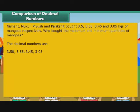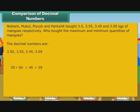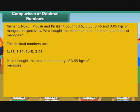So we have 3.50, 3.55, 3.45, 3.05. All the numbers have 3 to the left of the decimal point. Therefore, we arrange them on the basis of the digits after the decimal point: 50, 55, 45, and 05. We know that 55 is greater than 50, which is greater than 45, which is greater than 05. Therefore, the quantities in descending order are 3.55, 3.50, 3.45, 3.05. Mukul bought the maximum quantity of 3.55 kgs and Parikshit bought the minimum quantity of 3.05 kgs of mangoes.